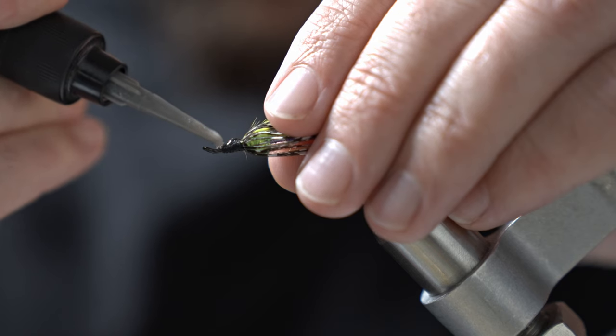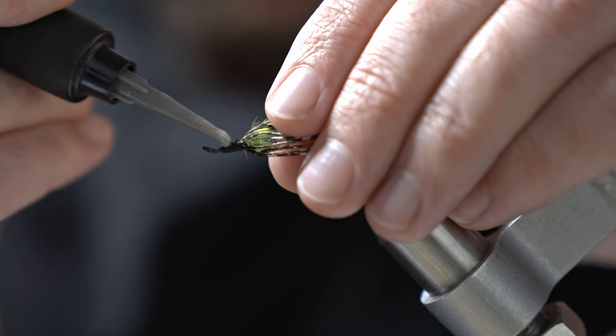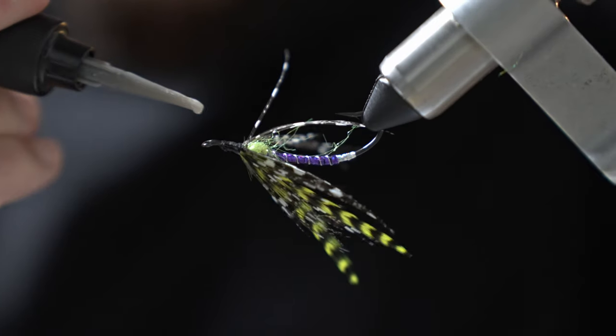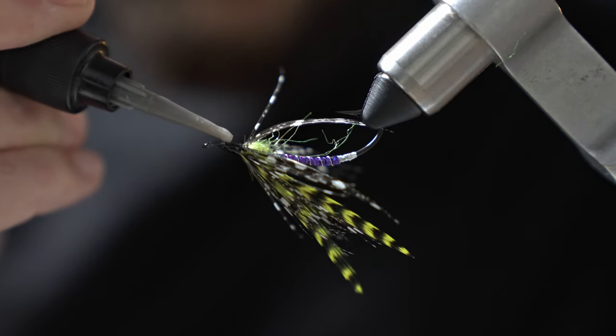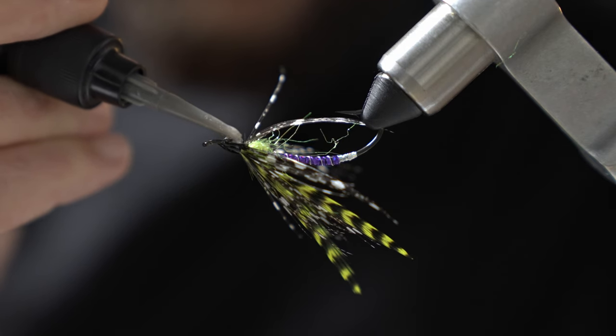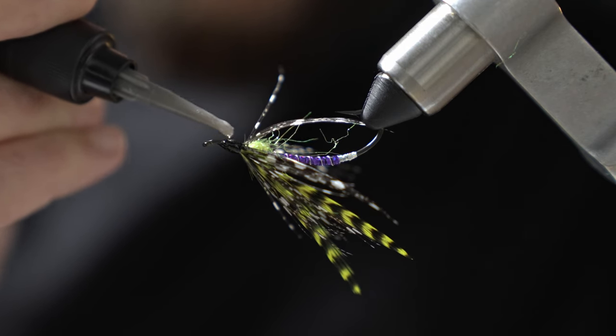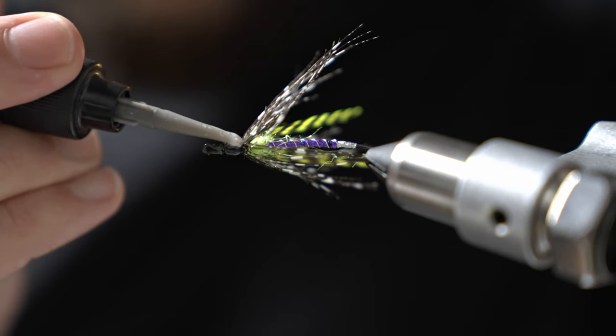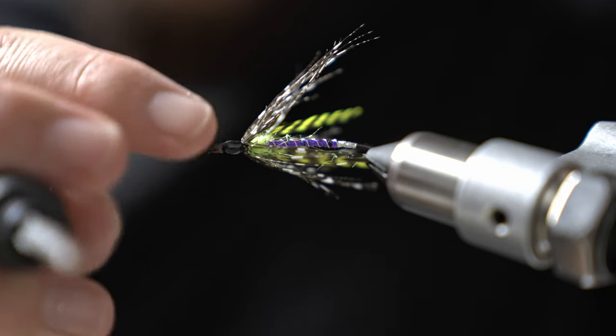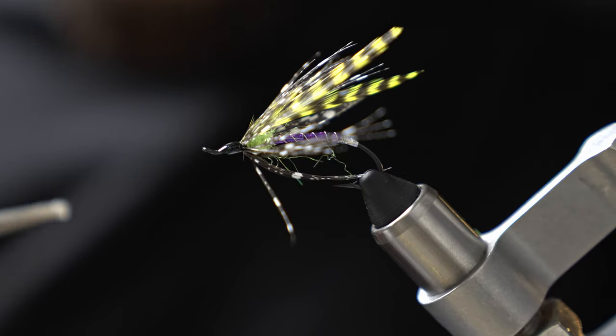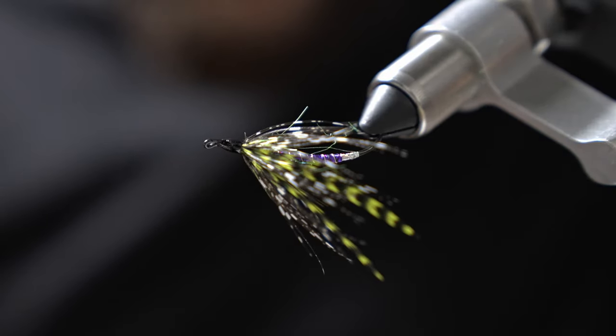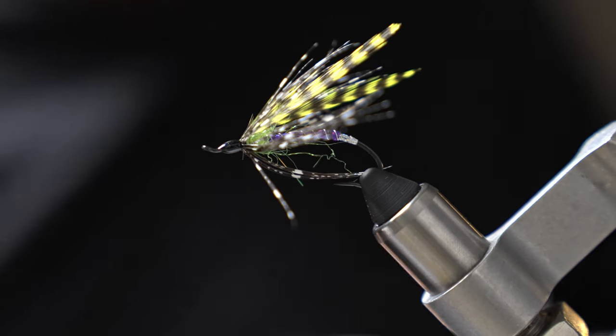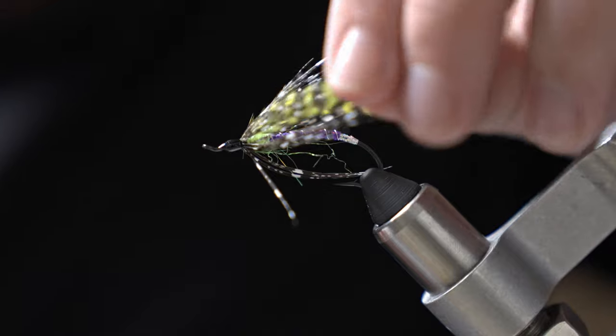So I'm going to use thick UV clear fly finish. Try to get it somewhat even. I find that if you just get a fair amount on there and just continue to rotate it before you dry it, it'll kind of go to drip towards the bottom. So you can let it drip in the direction you need and then spin it back around right before it gets too heavy.